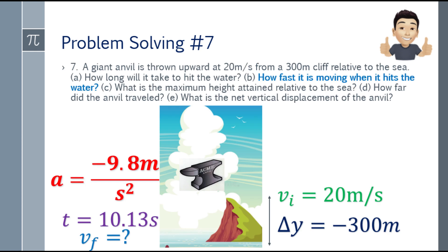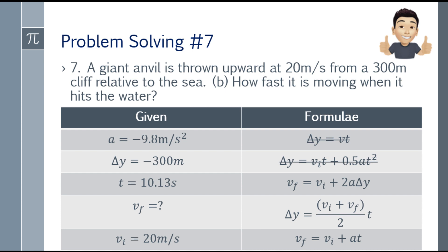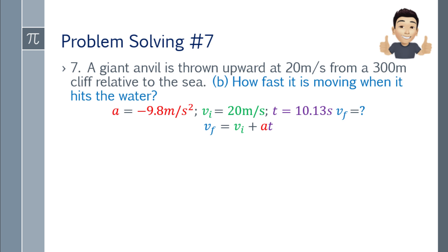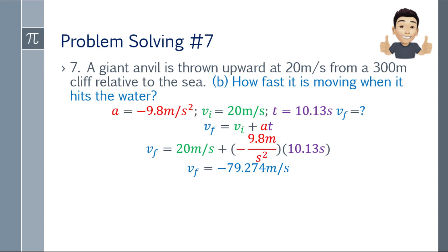Second question: how fast is the anvil moving when it hits the water? Using the fifth formula with initial velocity 20 m/s, acceleration negative 9.8, and time 10.13 seconds: final velocity equals 20 plus negative 9.8 times 10.13, which gives negative 79.274 meters per second. It's negative because the object is moving downward along the y-axis.